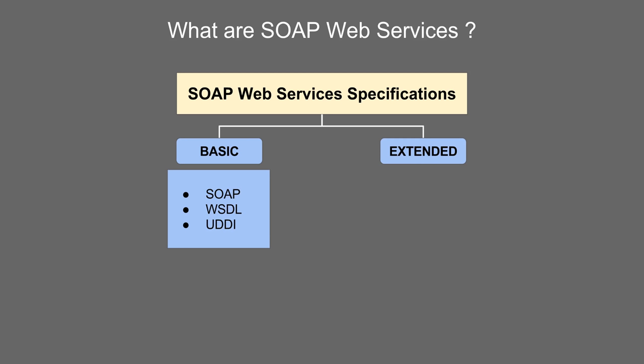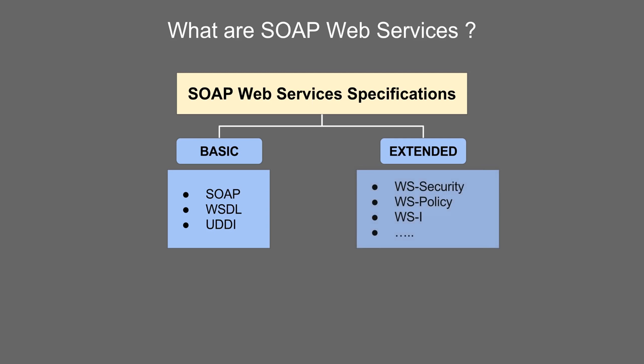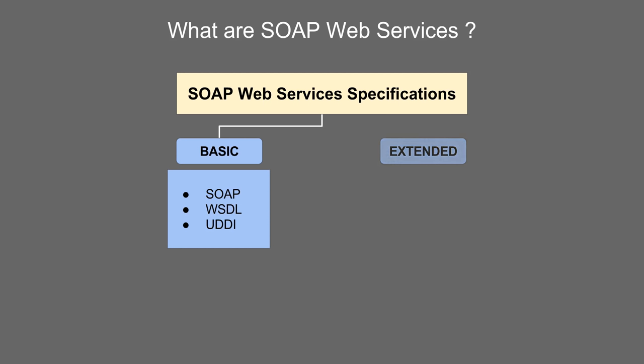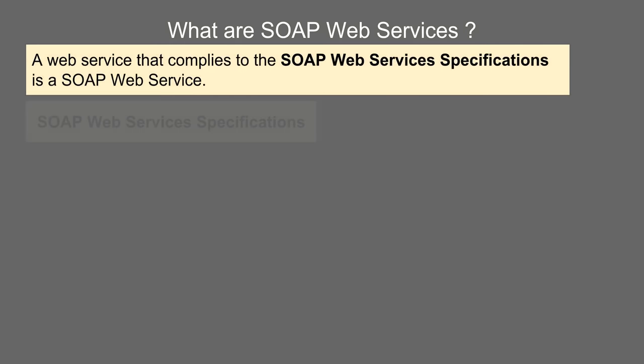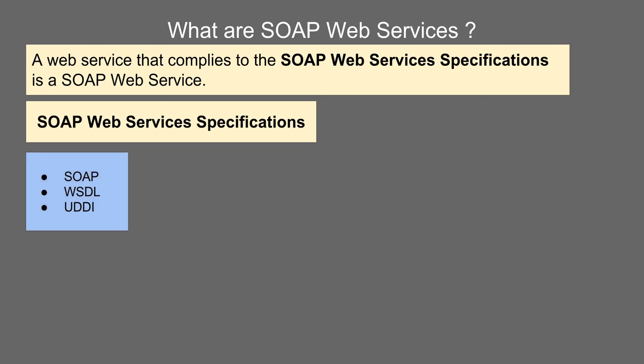There are some extended set of guidelines as well, and they include security and other things. Whenever we create web services for enterprise, we follow these guidelines as well. But in this session, we will focus on the basic specifications. Any web service that follows the SOAP web services specifications can be called a SOAP web service, and these guidelines are laid down by the central body W3C. There are three basic rules that a SOAP web service has to comply with.